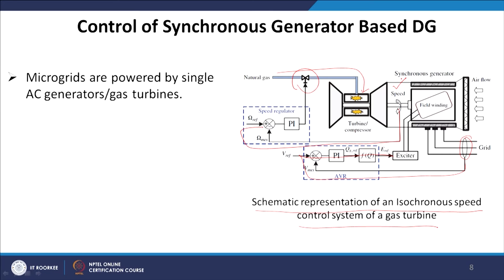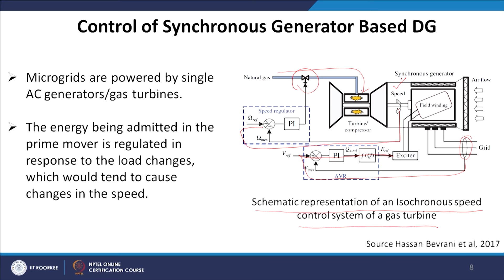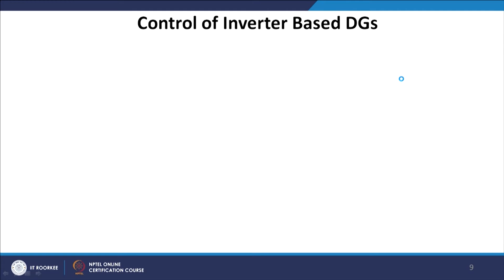Microgrids are powered by single AC generators or gas turbines. The energy admitted into the prime mover is regulated in response to load changes, which tend to cause changes in speed. If the load is changing, the speed changes, and that can be brought back to the desired speed through input changes.